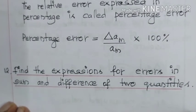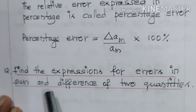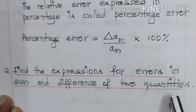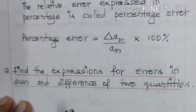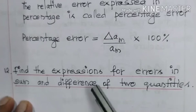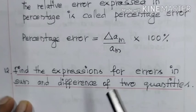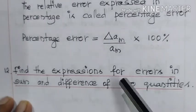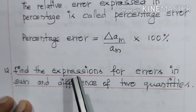Find the expressions for errors in sum and difference of two quantities. When we add two quantities, then we get errors and we need to find the expression for it. Similarly, if we find the difference between two quantities, there also we may get errors and we need to find the expression for it as well.